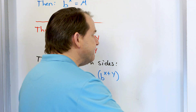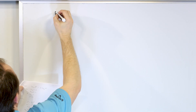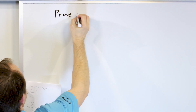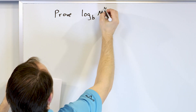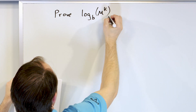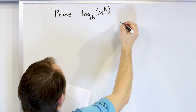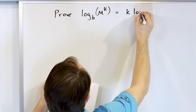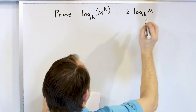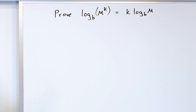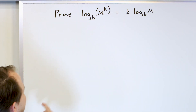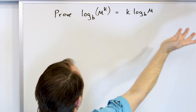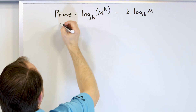Now let's go ahead and prove the one about exponents. We're going to prove that log base b of m to the power of k equals k times log base b of m. Basically, we can take an exponent and bring it out in front of the logarithm. How do we prove that? We're going to do similar kinds of assumptions.